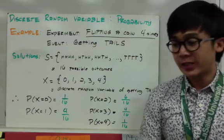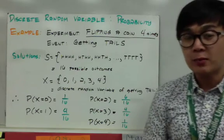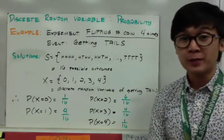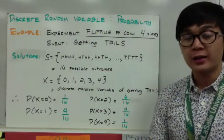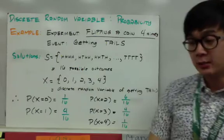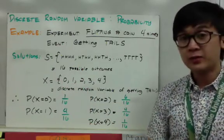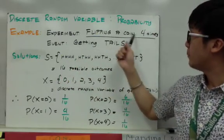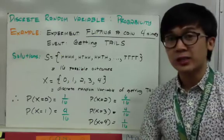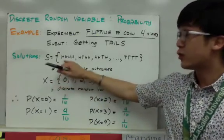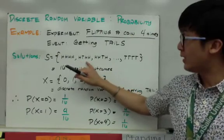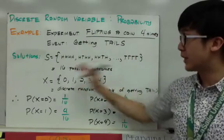Now we're going to focus on the first type of random variable, which is discrete random variable. In this probability question, we are here to find the random variable and its probability for the experiment of flipping a coin four times, focusing on counting the number of tails. The sample space for getting tails when you flip a coin four times equals 16 possible outcomes, and here are some combinations to visualize why we get 16.